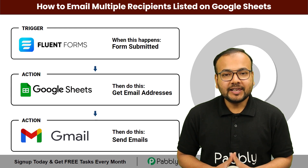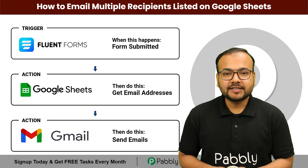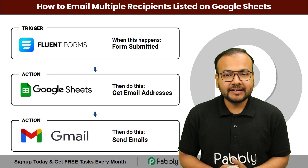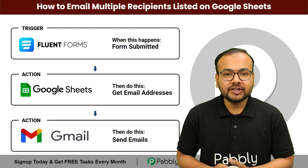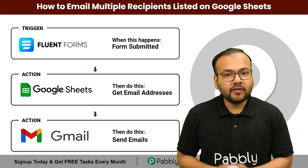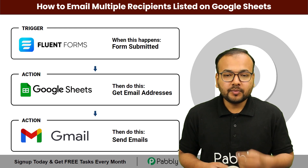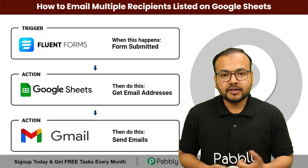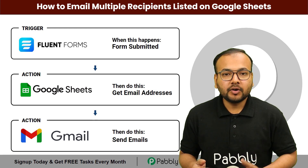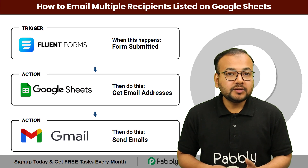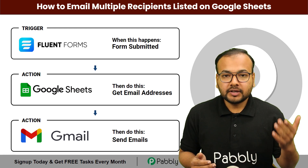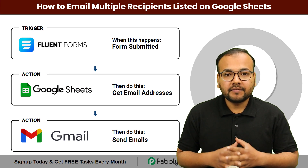In this video you will learn how you can send emails to multiple recipients listed in different categories in Google Sheets automatically, just by filling a form. This automation is used by one of our customers and is tried and tested for leveling up your email marketing. You can also use this automation to streamline your email marketing and save your manual efforts.